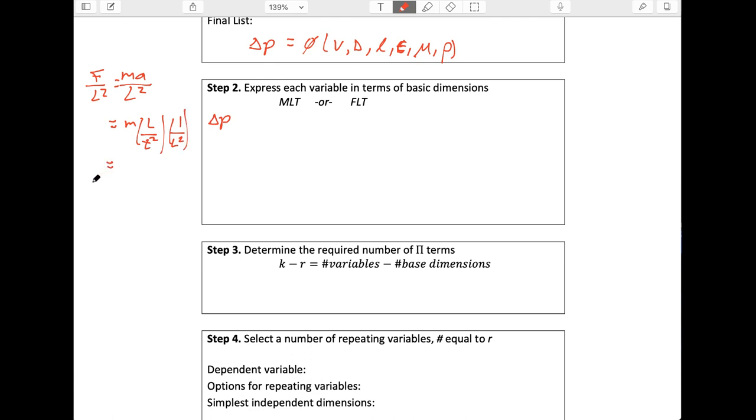And so a little bit of canceling there gives us that we could replace that force, that pressure with a mass per time, mass per time squared per length minus one. So delta P looks like M T to the minus two, L to the minus one.